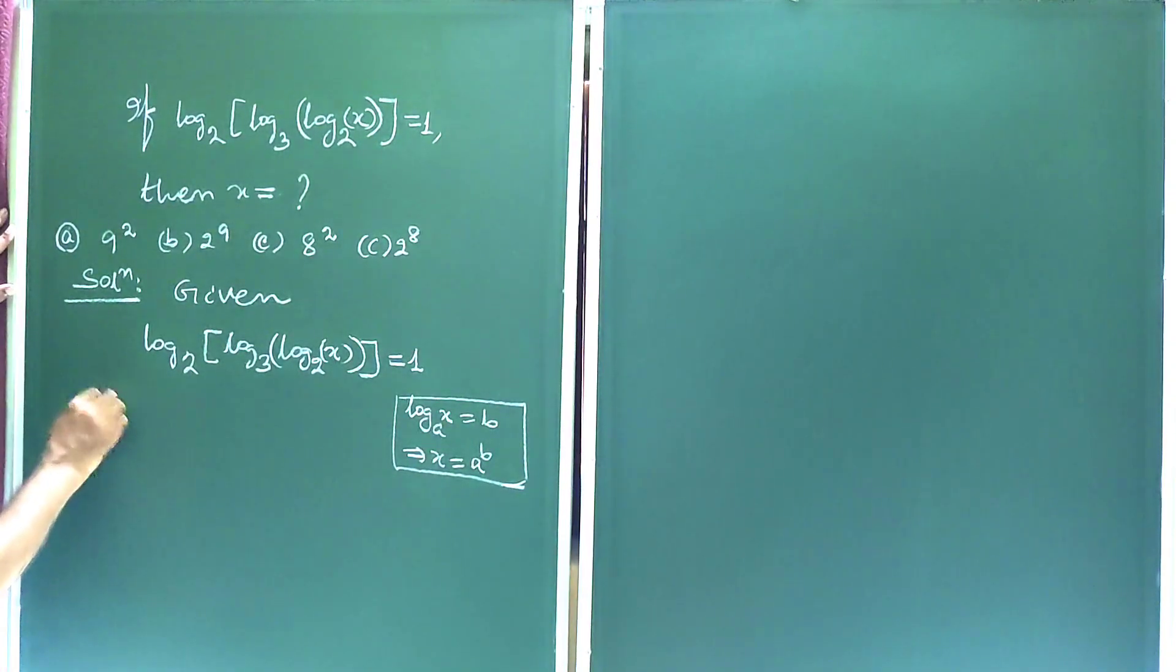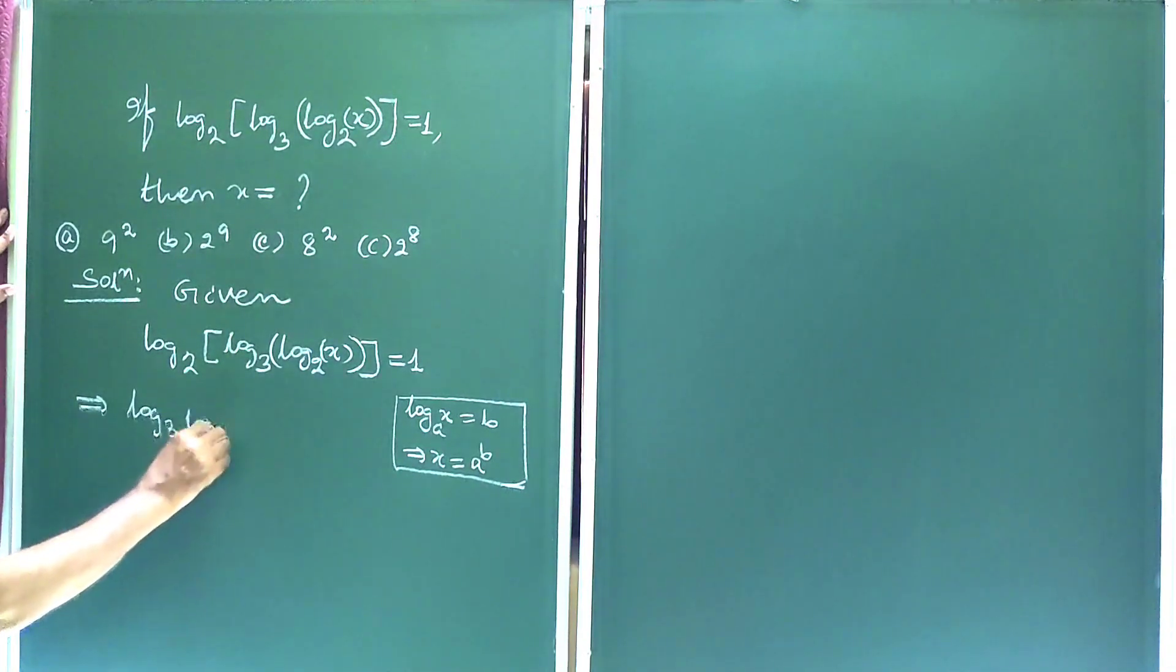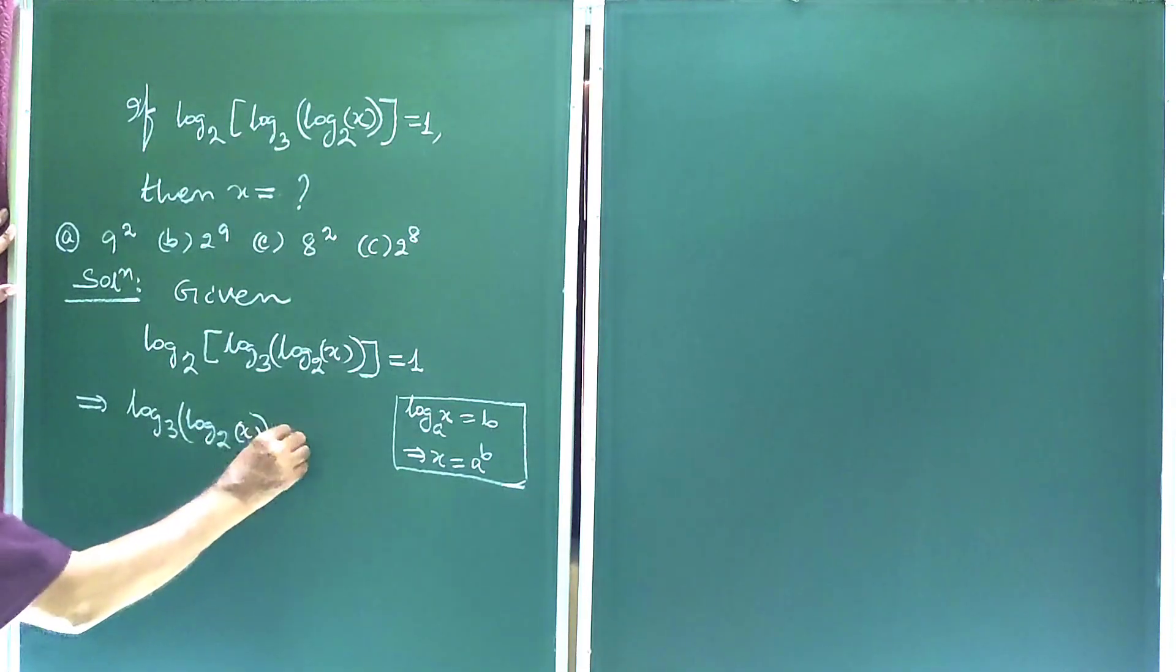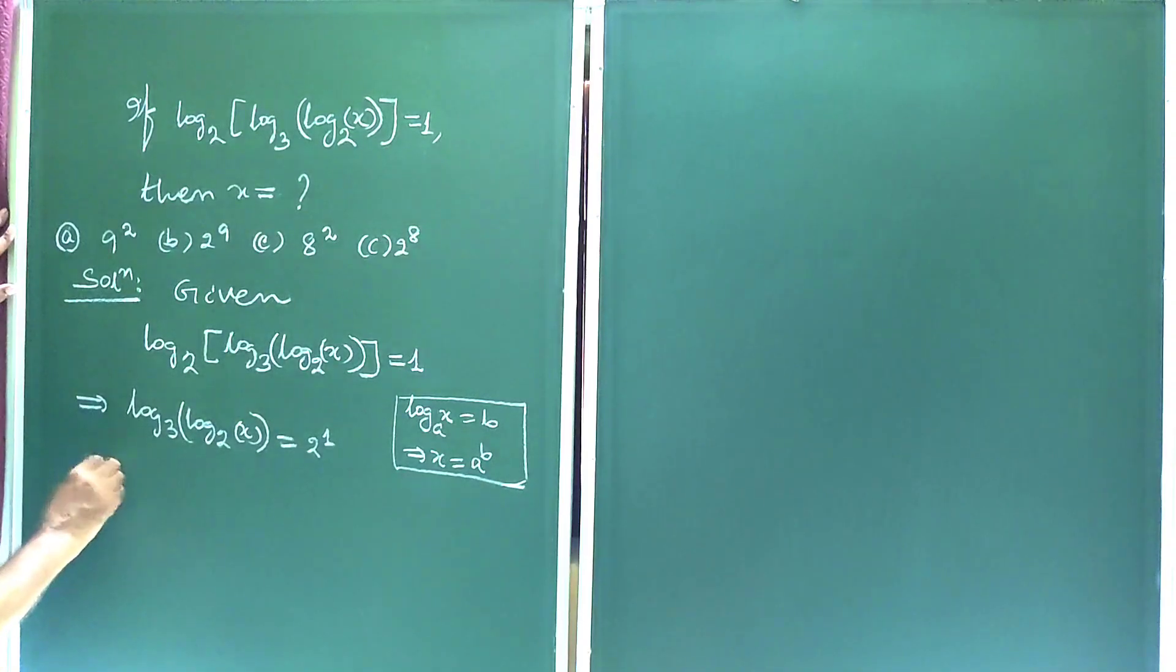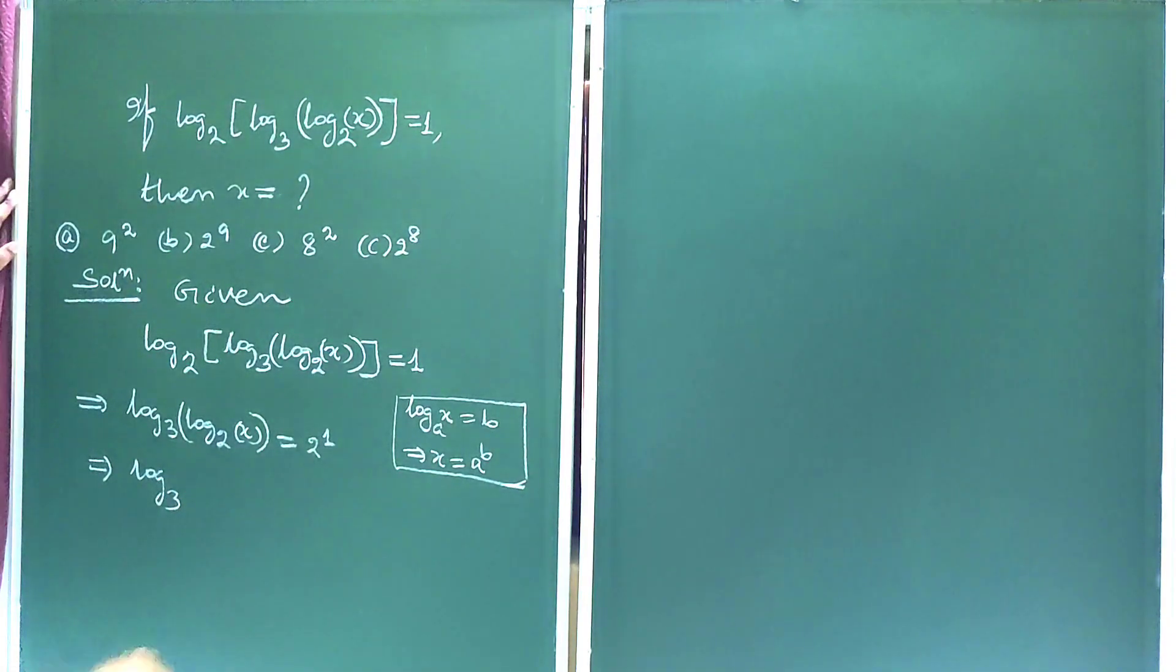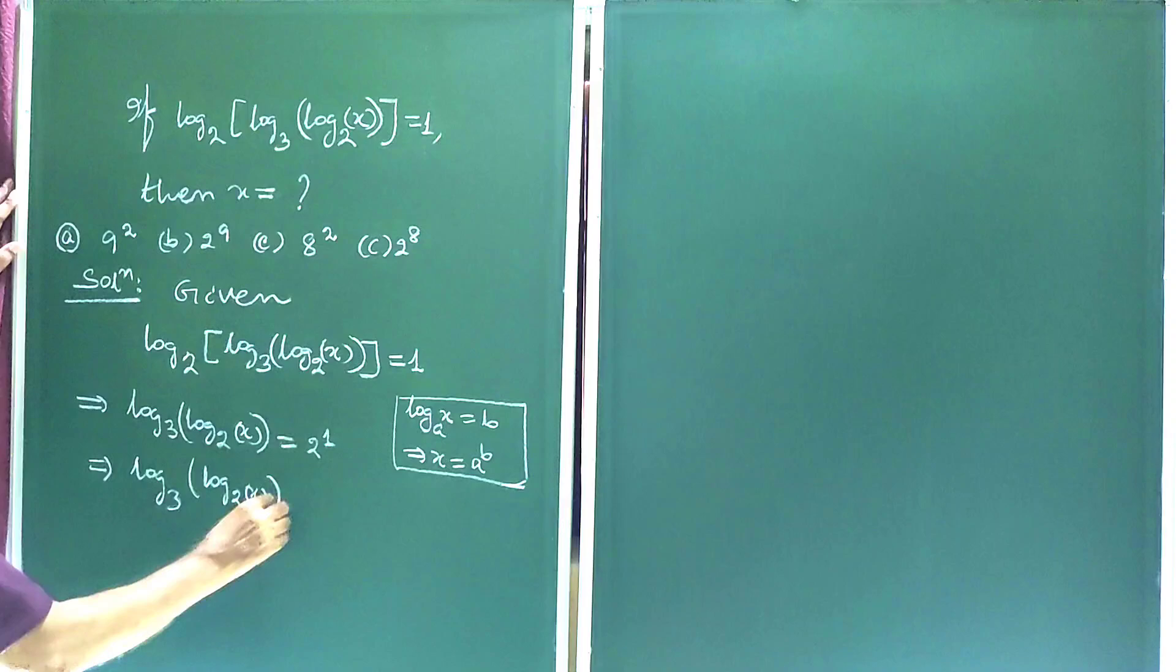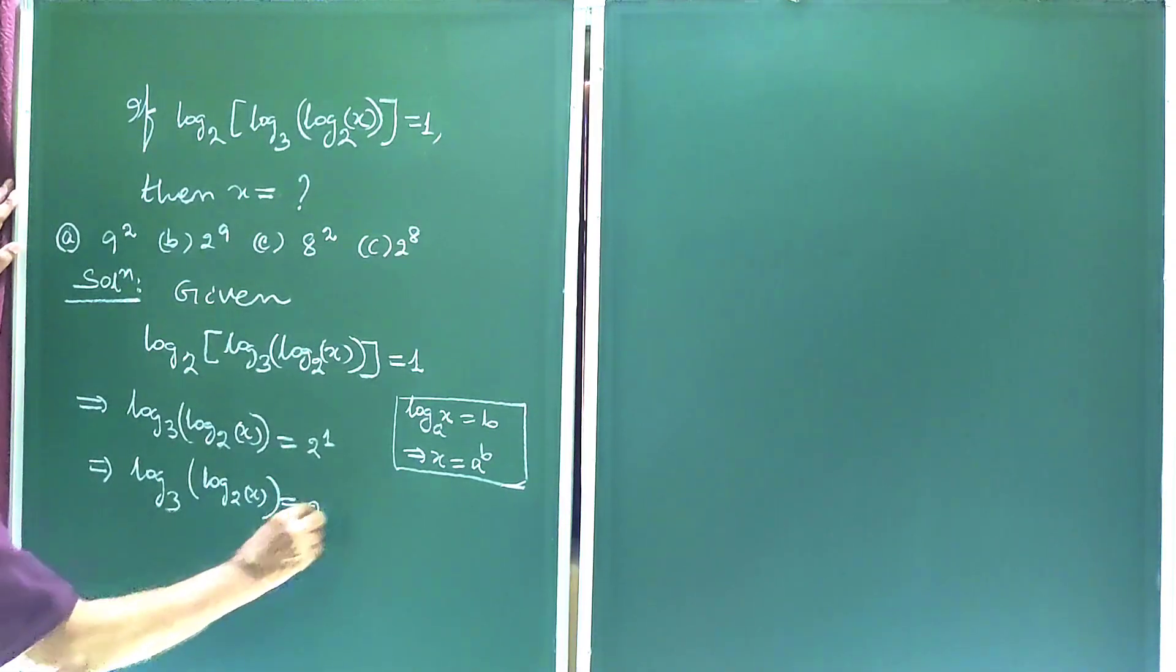So this implies log base 3 of log base 2 of x is equal to 2 to the power 1. This implies log base 3 of log base 2 of x is equal to 2.